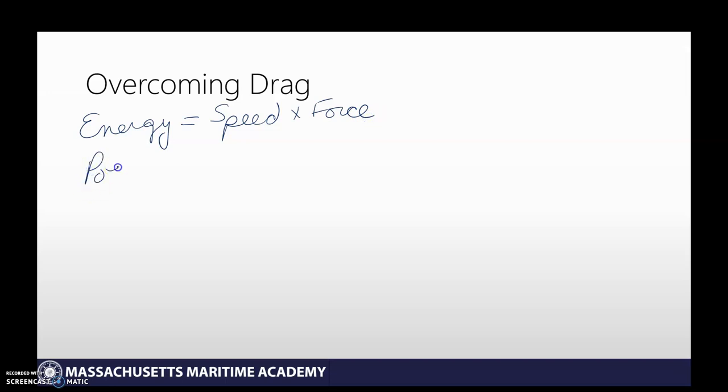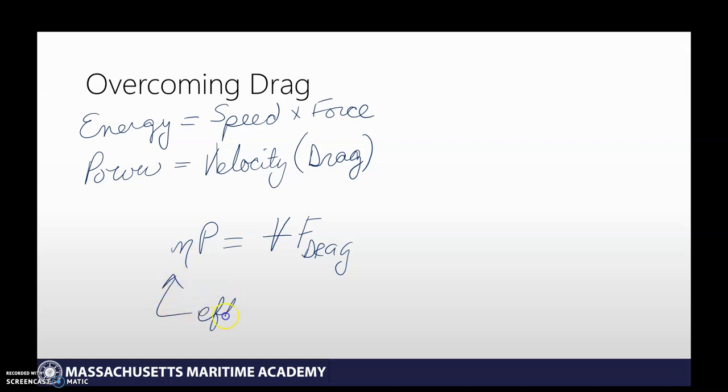So that means in our case, power is going to be the speed, which is our velocity, times the force. And we're going to need to have a force greater than drag. Drag is going to be the minimum to overcome that. And that's all there is to it. Power required is going to be the velocity times the force of drag. One thing that we can add to that is an eta, and that would be the efficiency of any transmission. And so that's how we'd be able to calculate out how much power we need to overcome the force of drag.